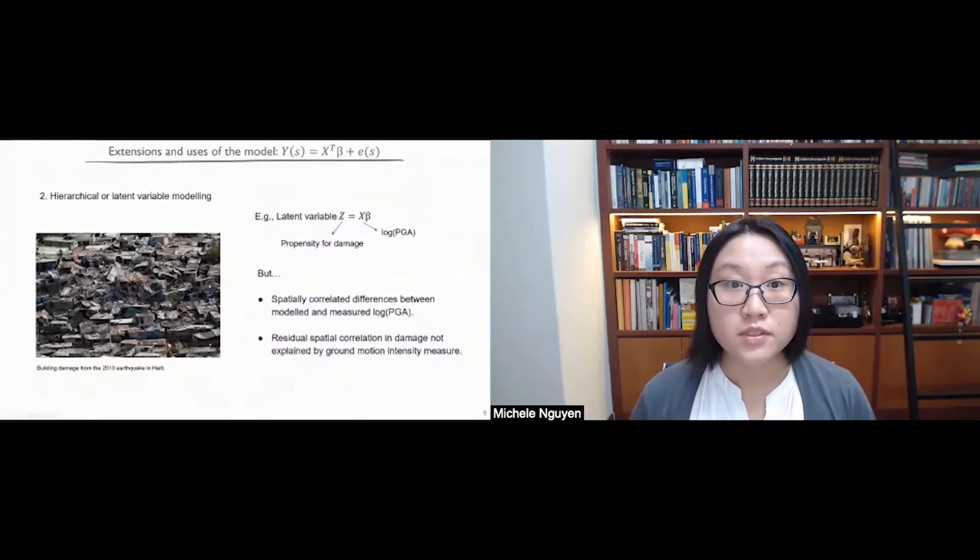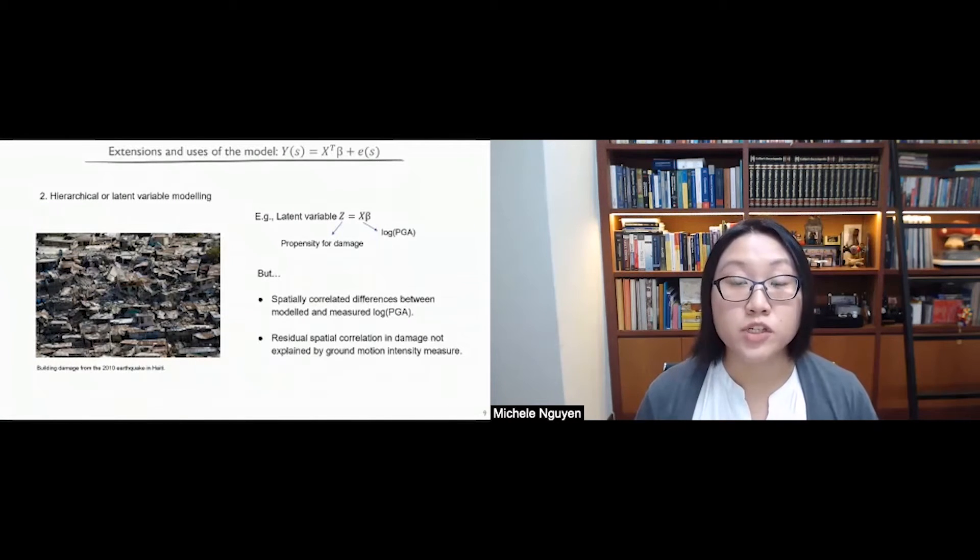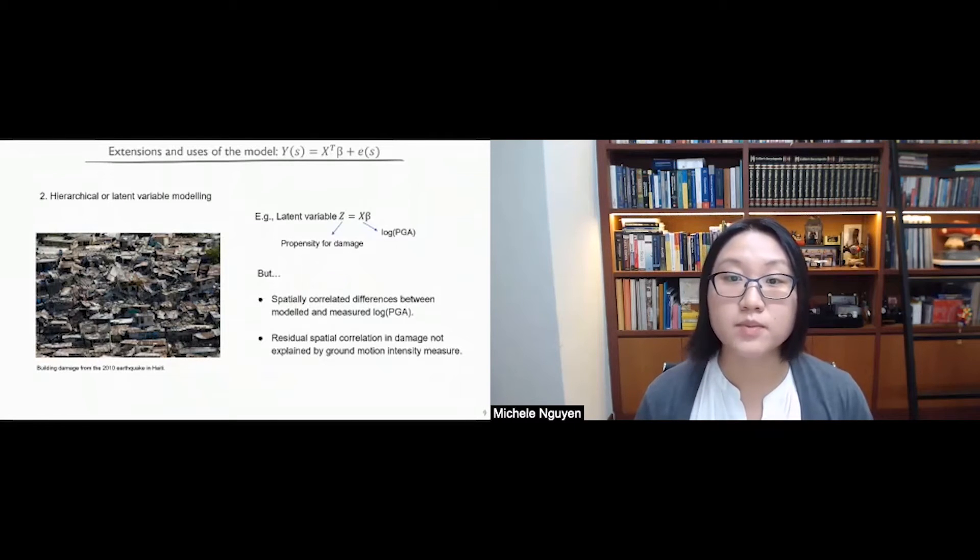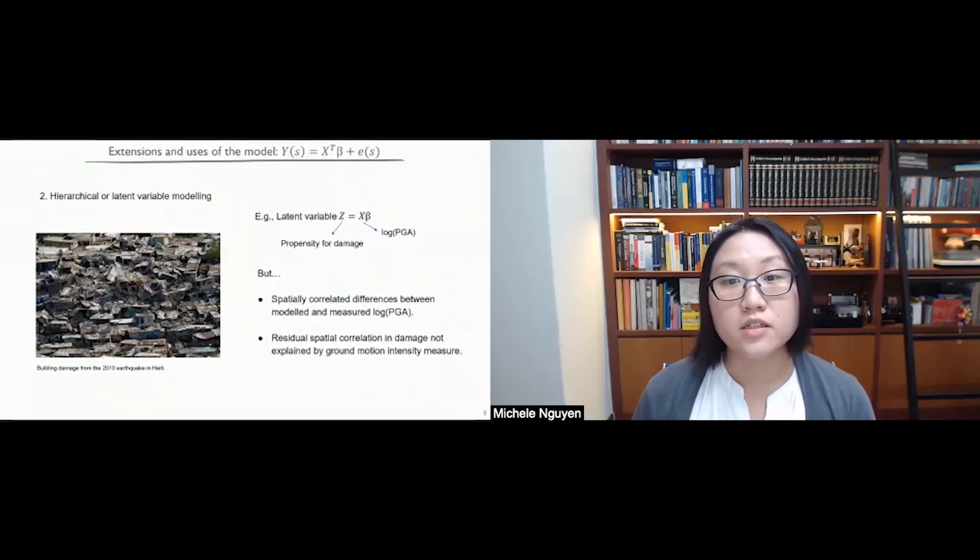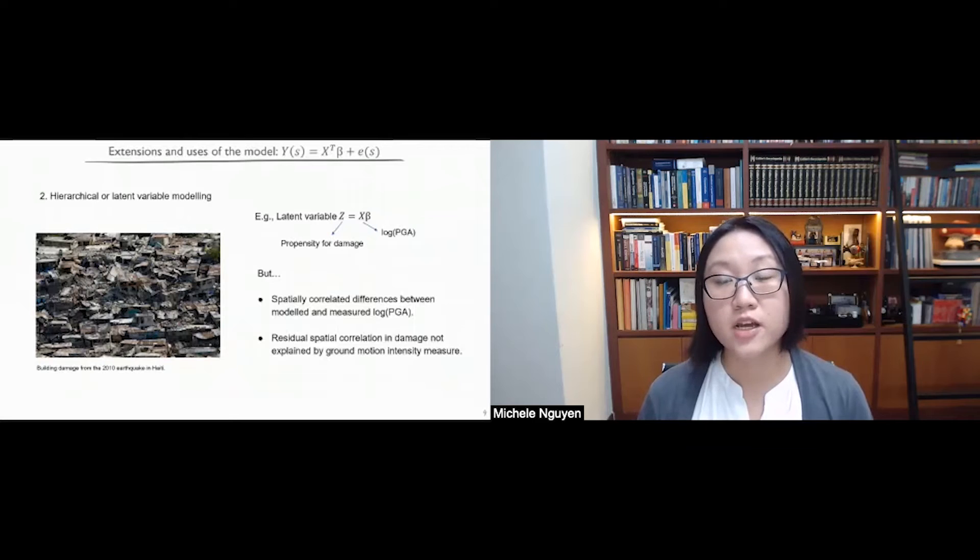Latent variables have also been used to build upon the classical geostatistical model. So the latent variable is a variable which is not directly observed, but it is inferred through other variables which are. So this method has been proven useful in one of the projects that I'm currently working on about estimating earthquake building damage. So conventionally, earthquake engineers model damage by relating it to underlying ground motion intensity measures, such as log of PGA, which is peak ground acceleration. So the higher the intensity measure, the higher the expected damage. And so a latent variable for the propensity for damage might look a bit like z equals x beta as shown here, where x is log PGA and beta is some positive coefficient.